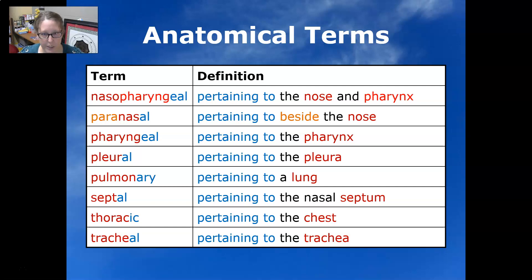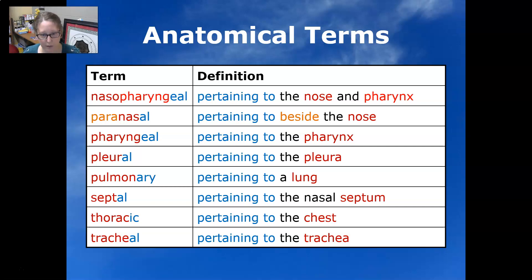Nasopharyngeal is pertaining to the nose and pharynx. Paranasal is pertaining to the side of the nose. Pharyngeal is pertaining to the pharynx. Pleural pertains to the pleura. Pulmonary pertains to a lung. Septal is pertaining to the nasal septum. Thoracic is pertaining to the chest. Tracheal is pertaining to the trachea.